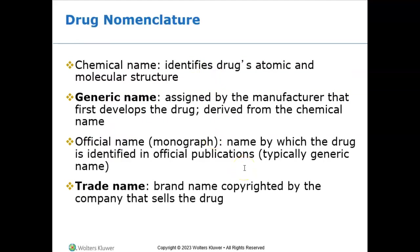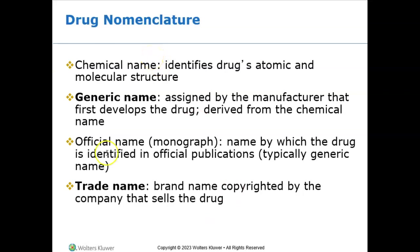The generic name is assigned when the drug first comes out, derived from the chemical name. The trade name is the brand copyrighted by the company that sells the medication. For example, Tylenol is the brand name and acetaminophen is the generic name — that's an easy way to think of it.